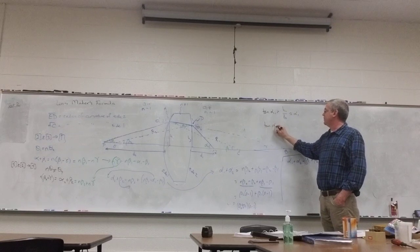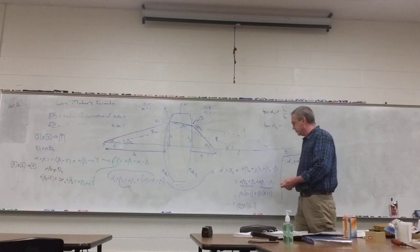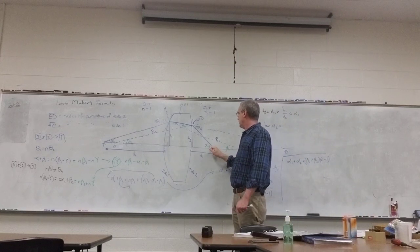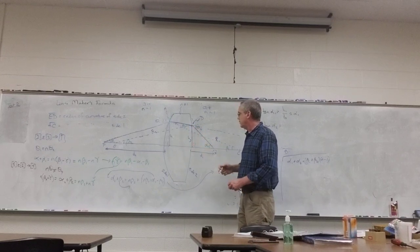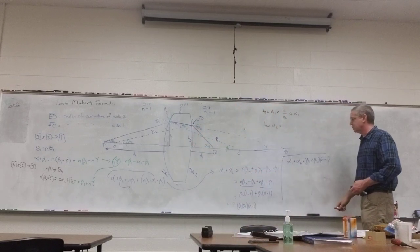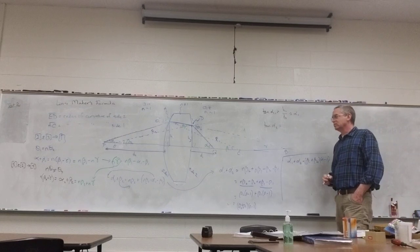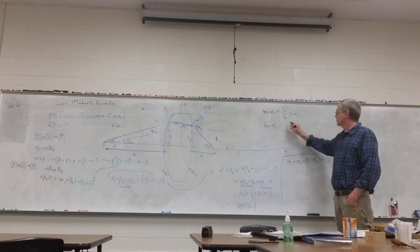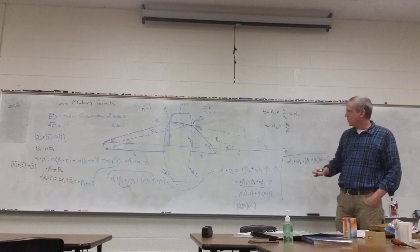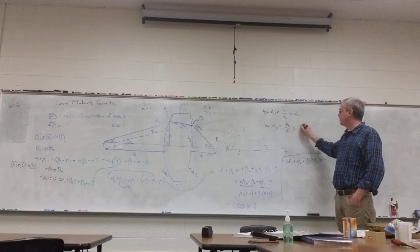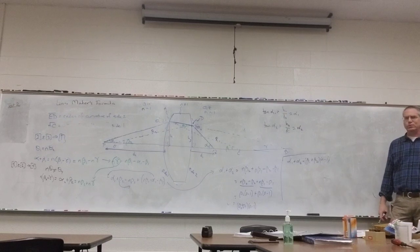The tangent of alpha 2. We'll do the other triangle. What's the tangent of alpha 2? H3 over D0. And again, if we assume small angle. Now it's not a small angle the way I've drawn it here, but that's also a really huge lens.